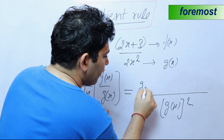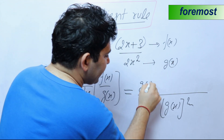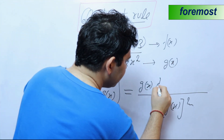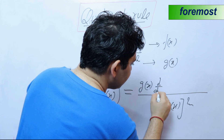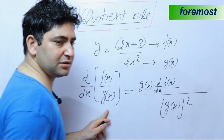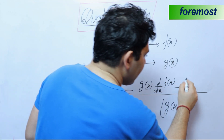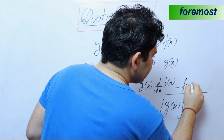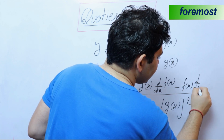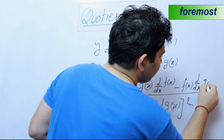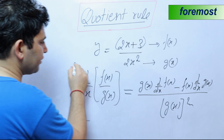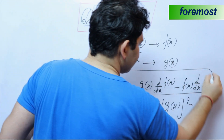And in the numerator: g of x as it is, multiplied by the differentiation of f of x, minus f of x as it is, multiplied by the differentiation of g of x. So this is the quotient rule.